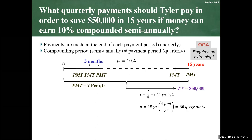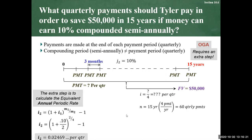To find the equivalent quarterly interest rate, we use our equivalent interest formula: (1 + 10%/2) raised to the power of 2/4, minus 1. Calculating this gives us 0.024693... per quarter with all the decimals.